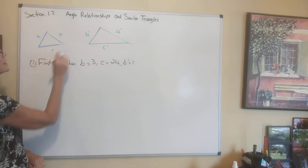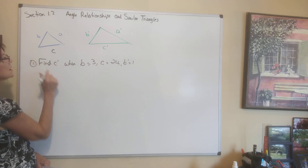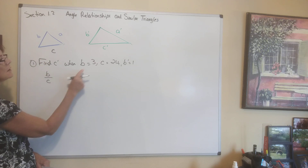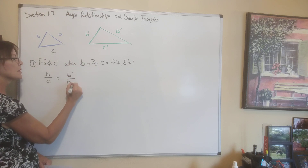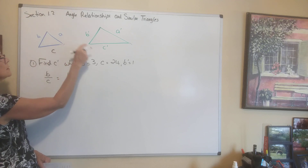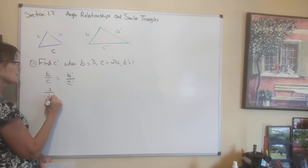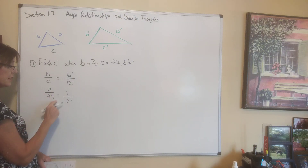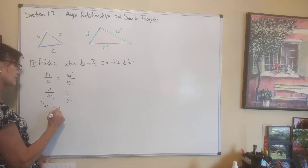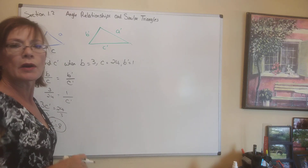Find C prime when B equals 3, C equals 24, and B prime equals 1. Given that these are similar triangles, we write the proportion B is to C as B prime is to C prime. That gives us 3 is to 24 as 1 is to C prime. Cross-multiplying: 3 times C prime equals 24, so C prime equals 8.